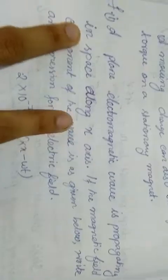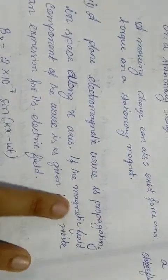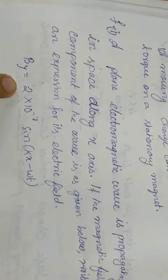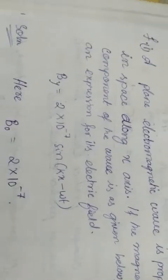Next question: A plane electromagnetic wave is propagating in space along the X axis. If the magnetic field component of the wave is given below, write its expression for its electric field. By is equal to 2 into 10 to the power minus 7 sin kx minus omega t.